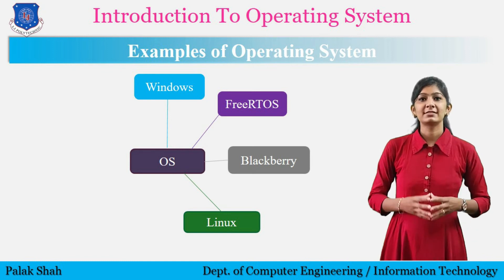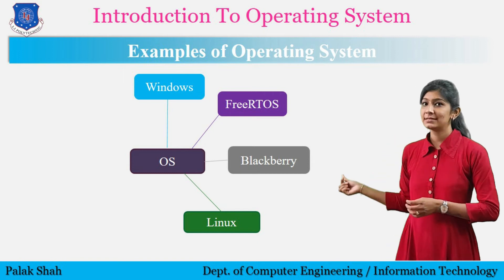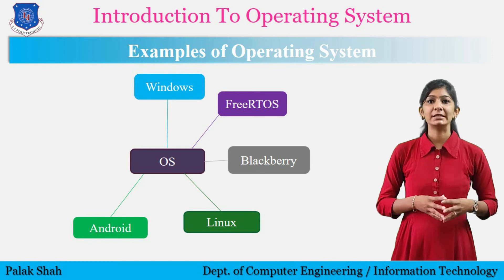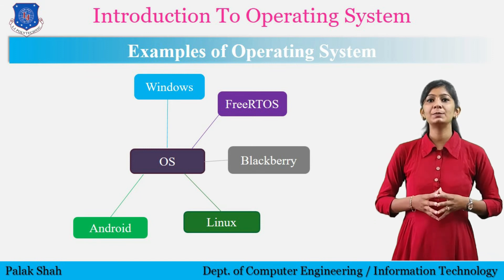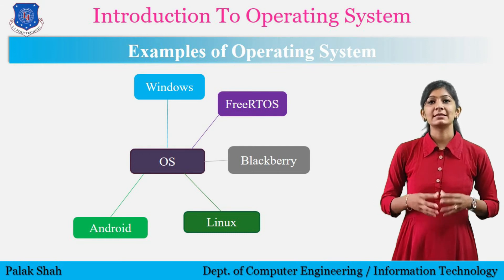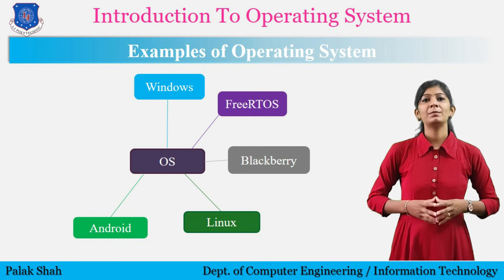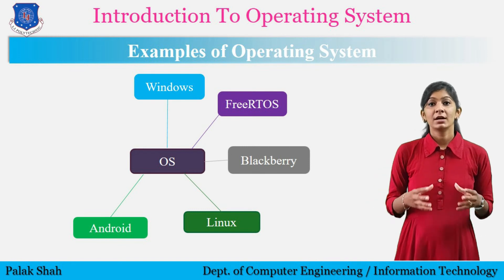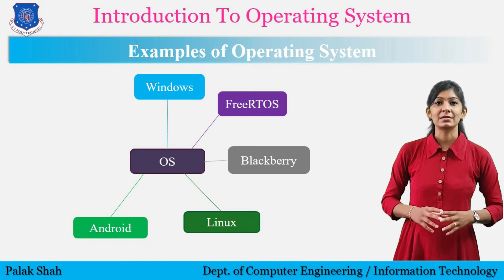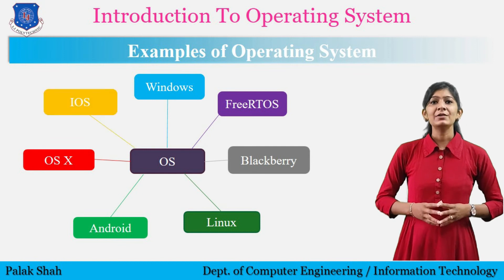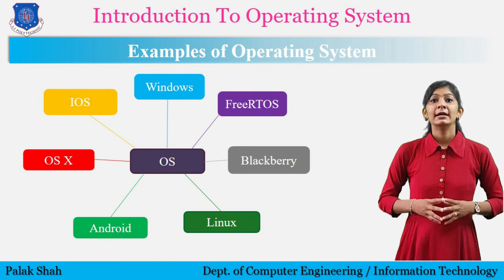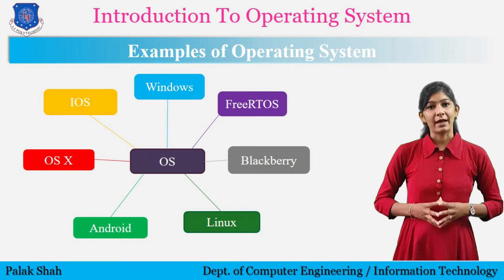Another example of an operating system that we often use is Android. Android is a mobile operating system based on a modified version of the Linux kernel and other open-source software, designed for mobile devices such as smartphones and tablets. It was developed by Google, and the first Android device launched in September 2008. Another operating system is OS X, which is a line of operating systems created by Apple.